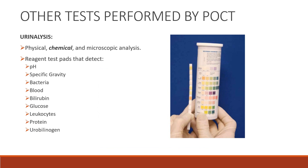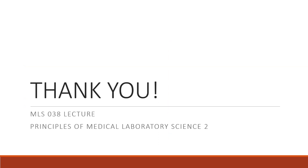Finally, we have urinalysis tests, which have three components: physical, chemical, and microscopic analysis. POCT is being developed for the chemical testing, using reagent test pads that detect the following parameters: pH, specific gravity, bacteria, blood, bilirubin, glucose, leukocytes, protein, and urobilinogen. And that's all for point-of-care testing. Thank you so much for listening.